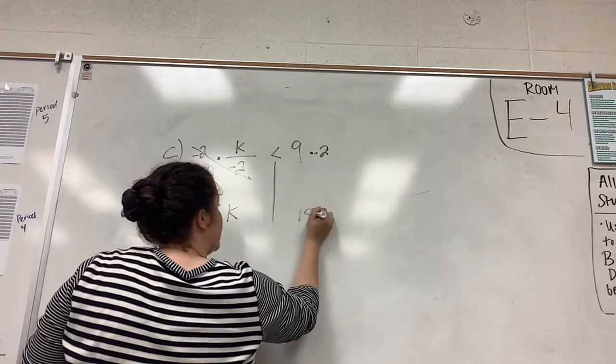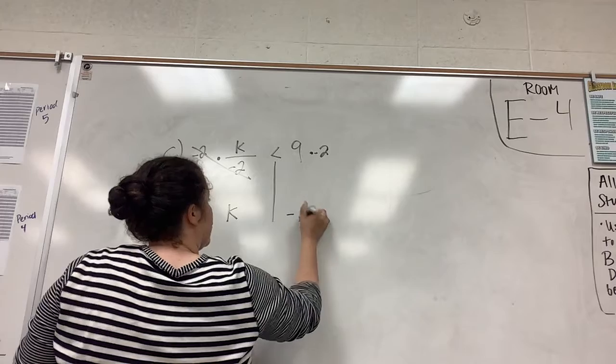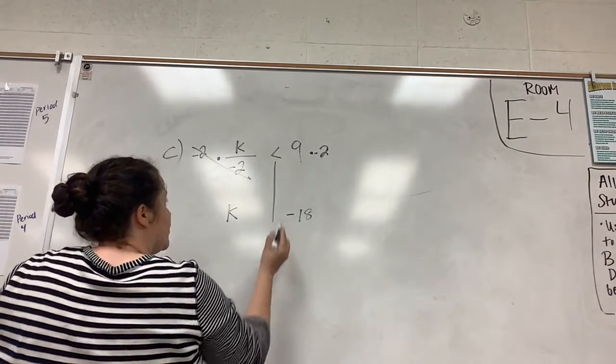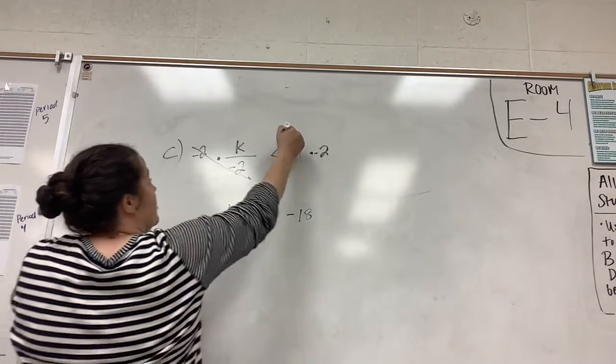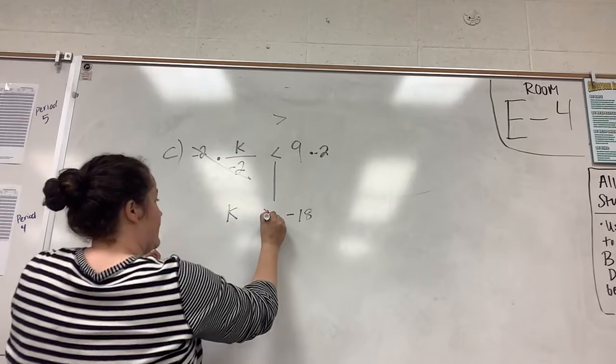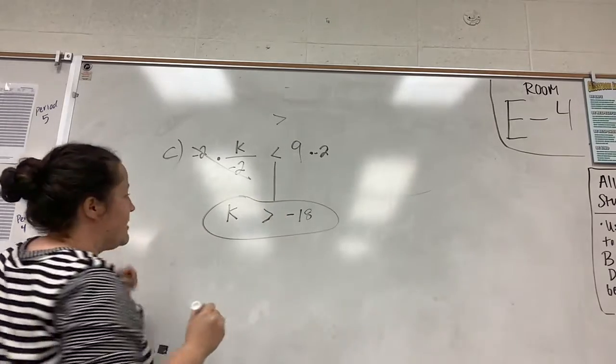We have 9 times 2 is 18, and there's 1 negative. But because we multiplied by a negative number, we actually have to change the sign. So we flip the sign to this. So it would be k is greater than negative 18.